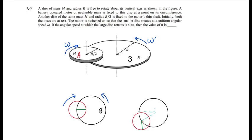A disc of mass M and radius R is free to rotate. Here we have marked disc B, which is rotating about its vertical axis freely. And then there is a battery operated motor which is fixed to the disc at its circumference. So here is a battery operated motor which is fixed to the circumference of disc B.